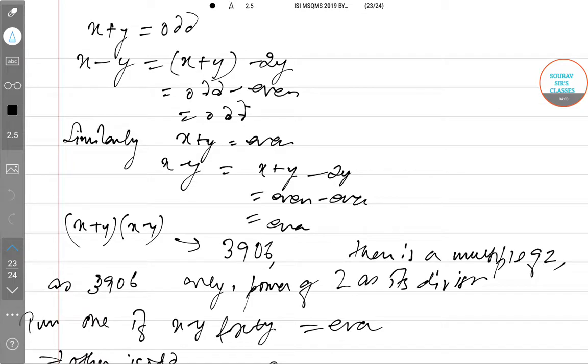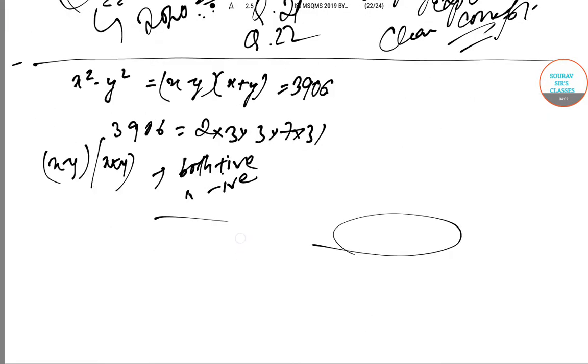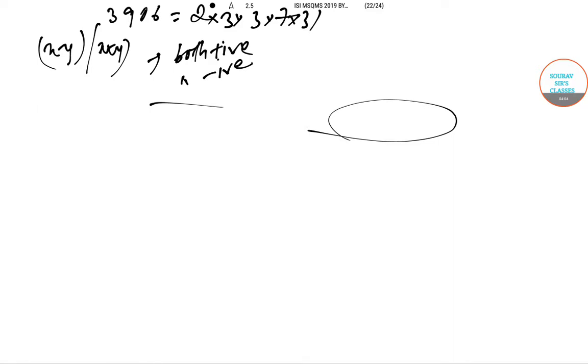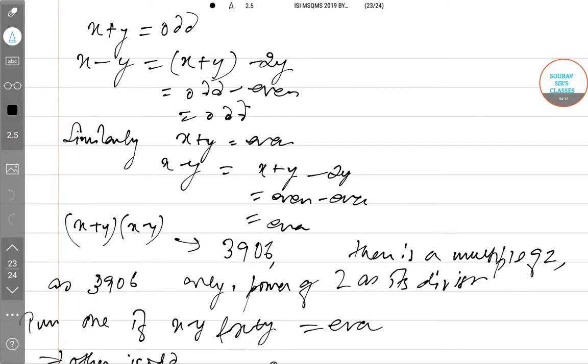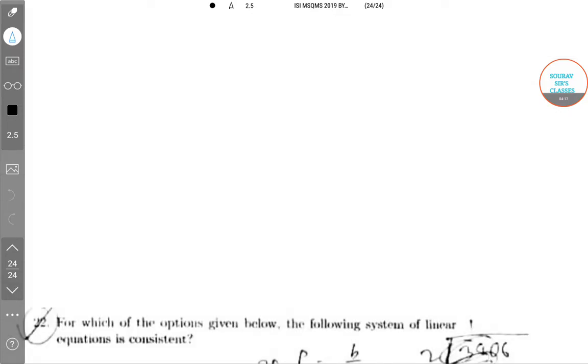The correct option for this question is option C, its value is 0. So we have solved ISI MSQMS 2019 question number 21. Now we will be heading towards question number 22 of ISI MSQMS 2019 paper.